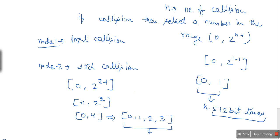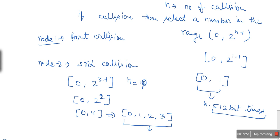There is a limit: the maximum number of collisions considered is n equal to 10. If a node experiences more than 10 collisions, n will still be capped at 10. So the maximum range is 0 to 2 to the power 10, which is 0 to 1023. This is the Binary Exponential Backoff algorithm. Thank you very much for watching.